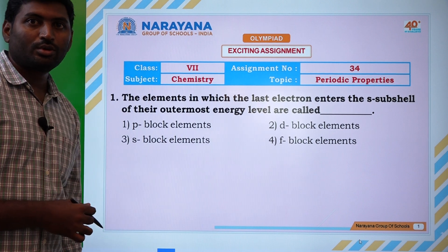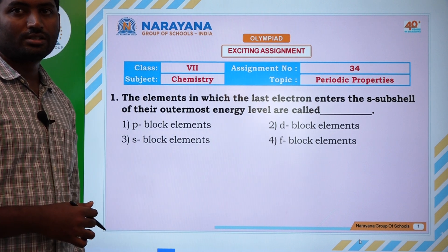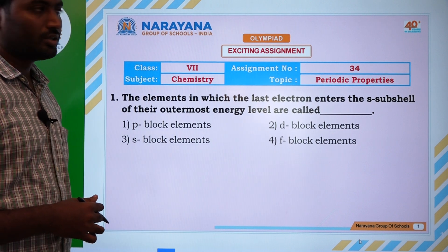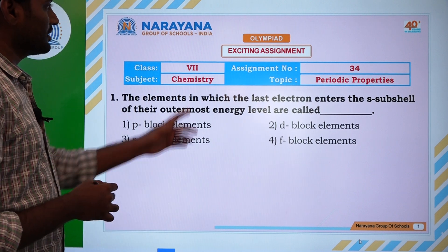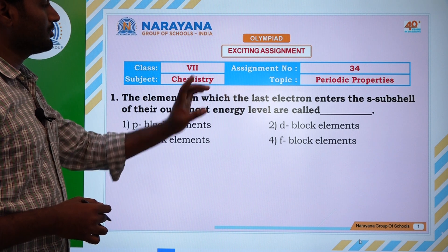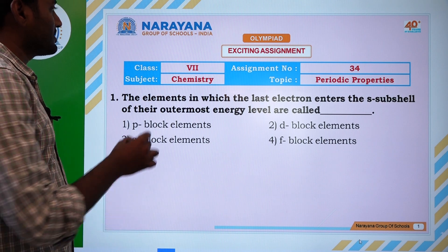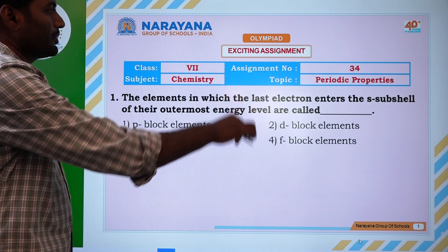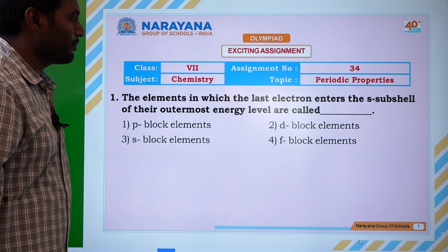Hi, welcome to Narayana Live Classes. Today we are going to discuss excitement assignment 34, class 7. Topic is periodic properties.